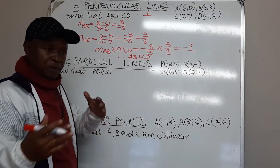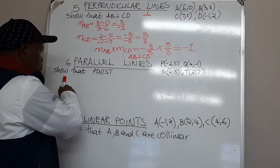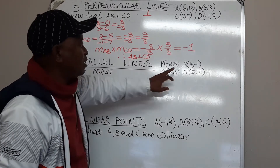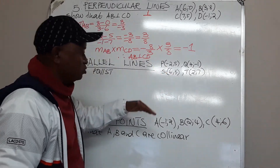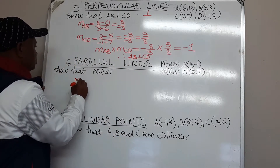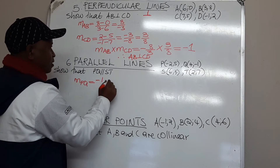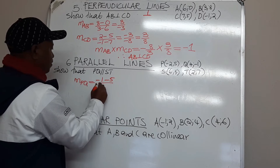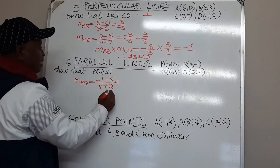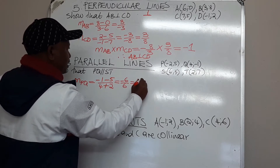The condition for lines to be parallel is when their gradients are equal. The question shows that line PQ is parallel to line ST. We must find their gradients. The gradient of PQ: using the gradient formula, I will have negative 1 minus 5 over 4 minus negative 2, which is positive. The answer is negative 6 over 6, which gives us negative 1.